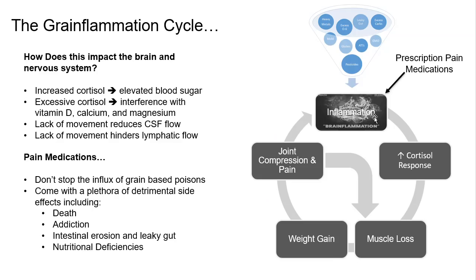There are a couple of ways we can impact this cycle. One is to change our diet — we change the input, we stop the inflammation, we don't need the medication. That's the big takeaway here. Joint compression and pain leads to more inflammation, but it also leads to more muscle loss.